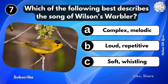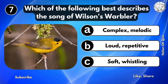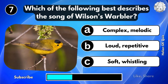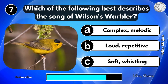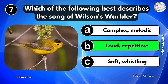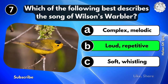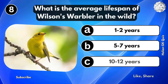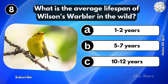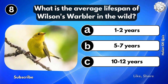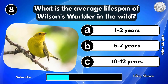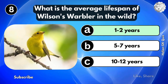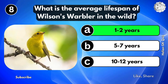Which of the following best describes the song of Wilson's Warbler? Loud and Repetitive. What is the average lifespan of Wilson's Warbler in the wild? 1 to 2 years.